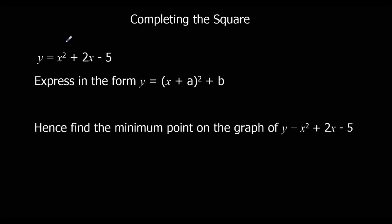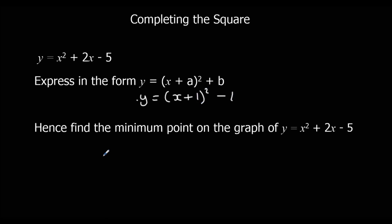Another question: express in the form of completing the square. This is our original. We're going to half the middle number, giving x plus 1 squared. We're going to take away 1 squared, which is 1. And we've still got minus 5 on the end. So that gives x plus 1 squared minus 6.